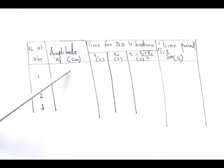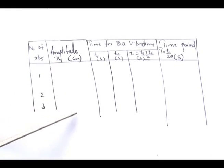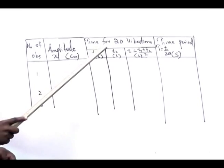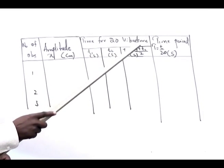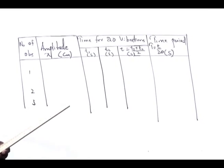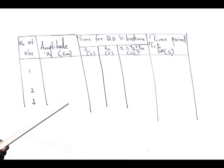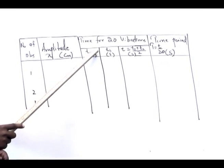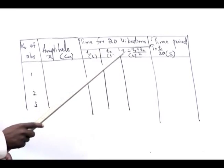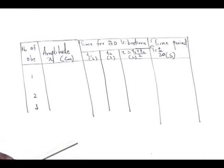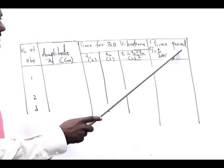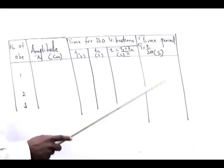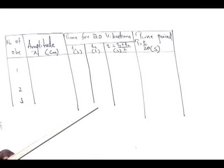Since we are changing the amplitude, we fill in different amplitude values in the second column. Then we find the time for 20 vibrations, measured twice, compute the mean value, and from that calculate the time period of the simple pendulum.